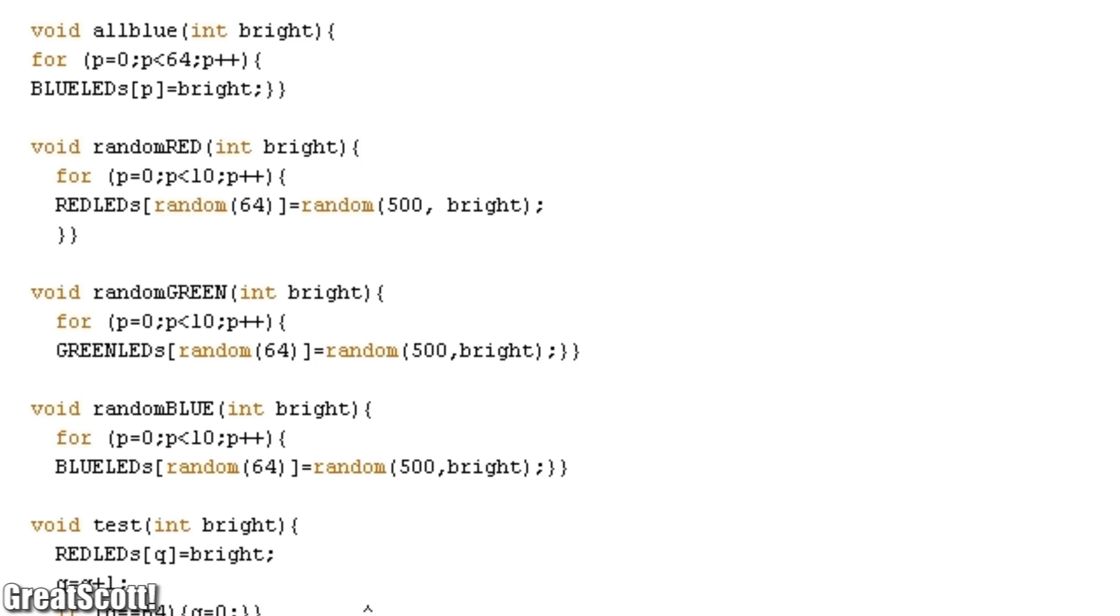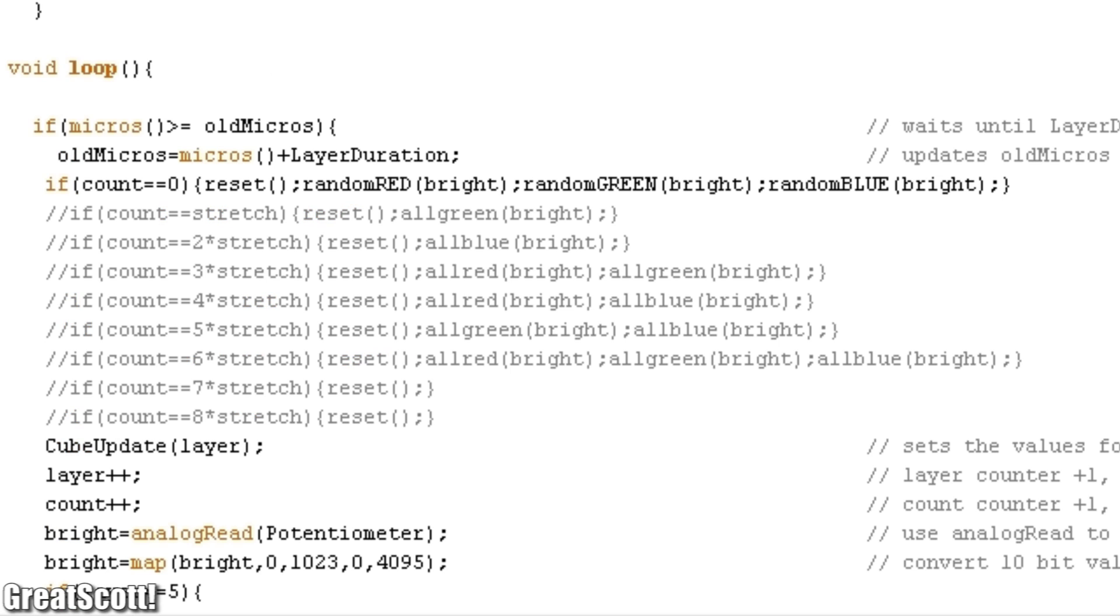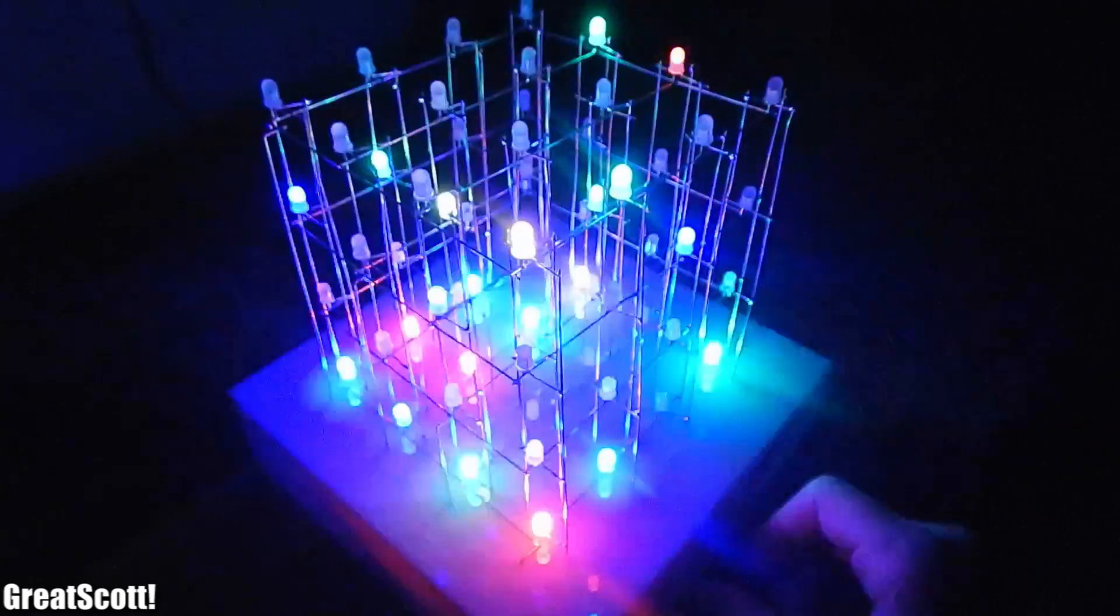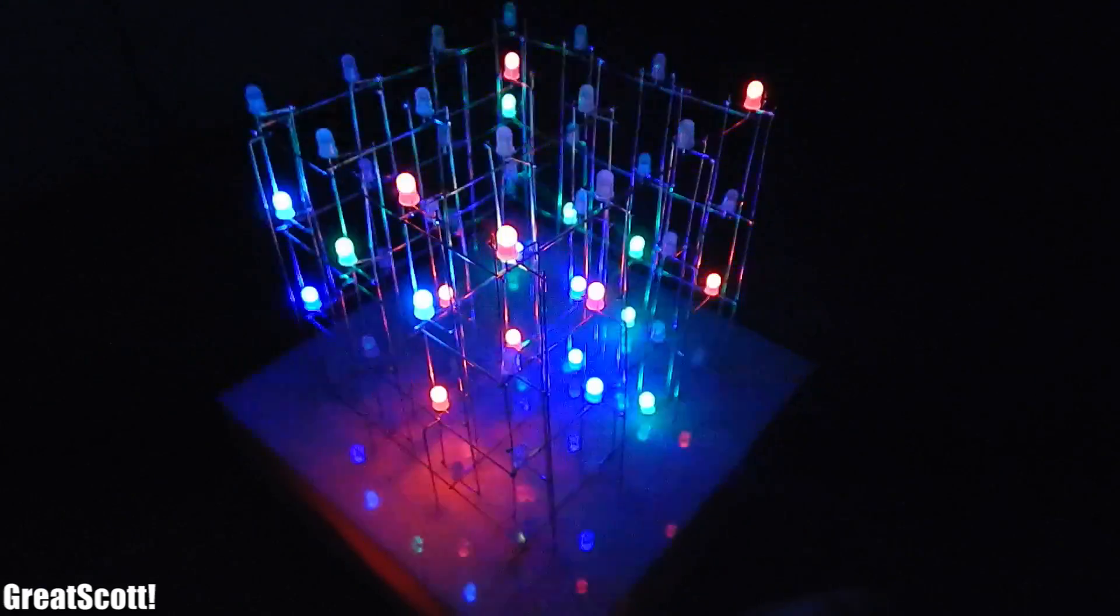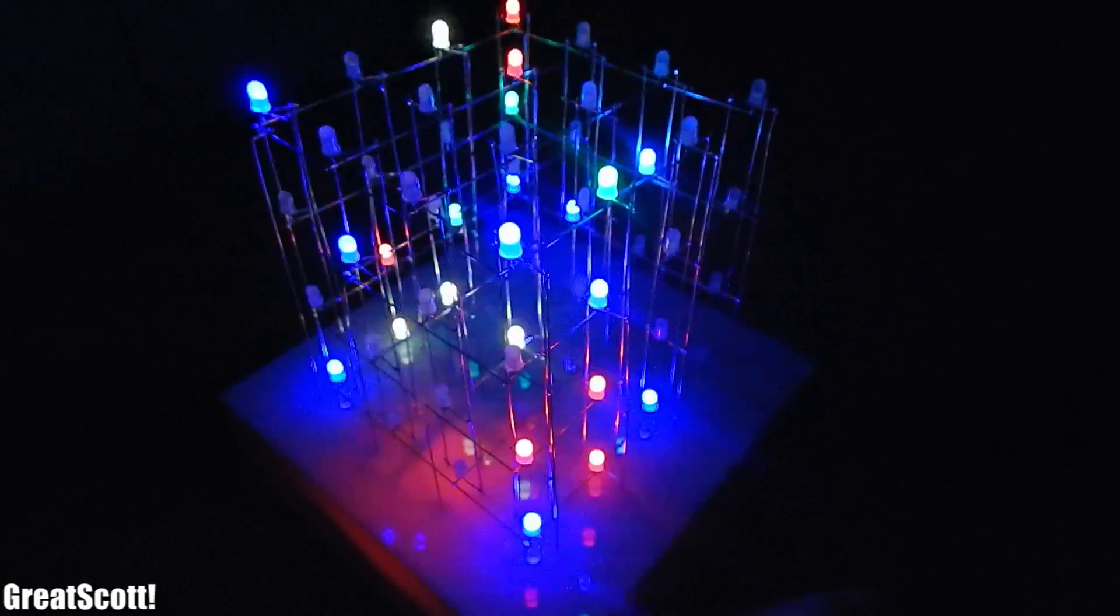The last animation is gonna be really simple, but still my favorite. I used the random function of the Arduino to turn on 10 random LEDs of red, green and blue with a brightness value between 500 and 4095. This shows off the capabilities of such a cube very well. And of course you can control the brightness.